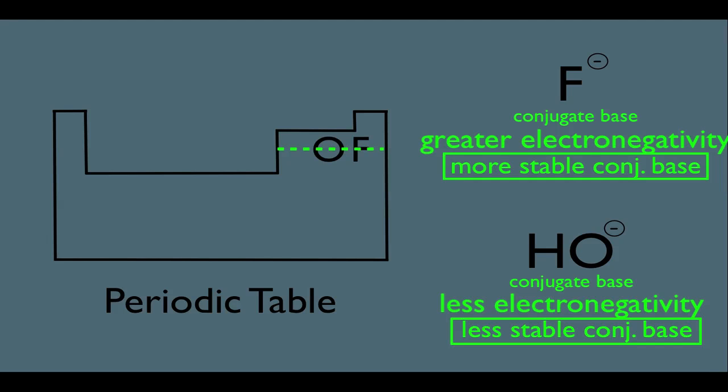They would be located on the same row. And if you remember from general chemistry, atoms located on the same row have roughly the same size. So that means the F- and the O- are similar in size.